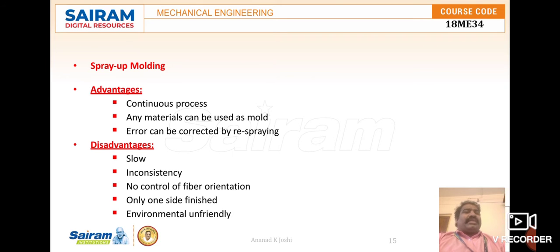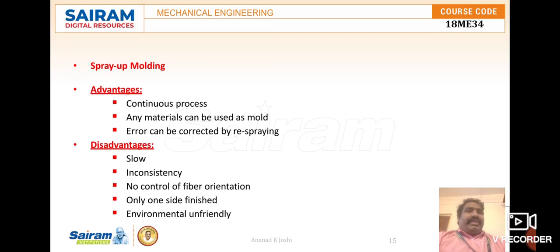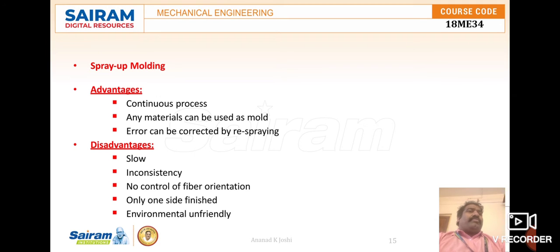Disadvantages of spray molding include slow and inconsistent processing, no control over fiber orientation, and only one finished side. It is also environmentally unfriendly due to chemical exposure to the atmosphere. Low-viscosity resins must be employed, which compromises favorable properties, and the use of short fibers limits the mechanical properties of the composites. Applications include lightly loaded structural panels such as caravan bodies, truck fairings, shower trays, and bathtubs.